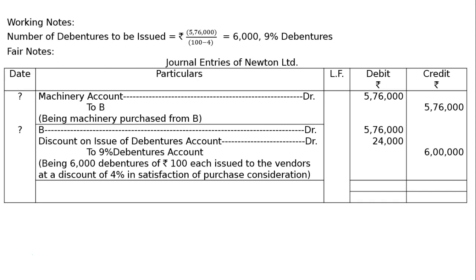The debit and credit columns are totaled at the end, that is ₹11,76,000 on both sides. And this is the final answer. Thanks a lot.